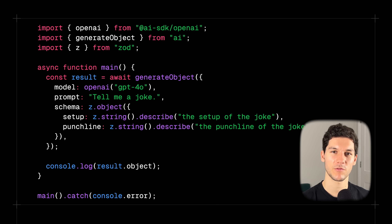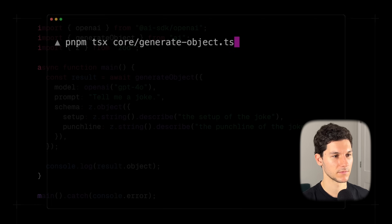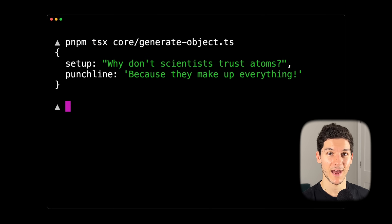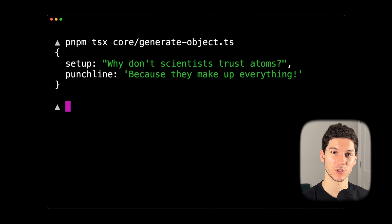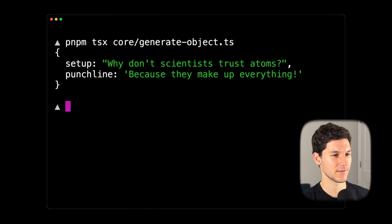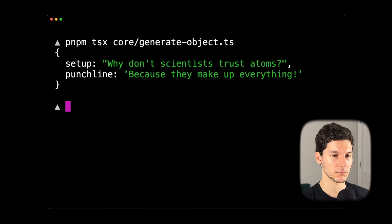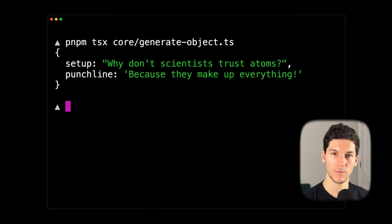Let's run this script and see what happens. Now we have our joke in a structured format. Setup: "Why don't scientists trust atoms?" Punchline: "Because they make up everything." Not too bad.